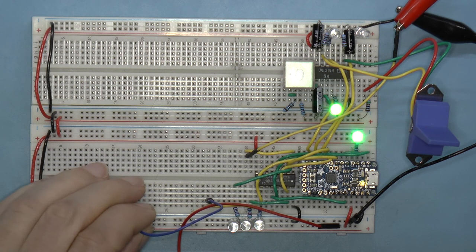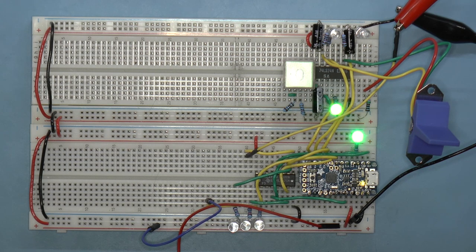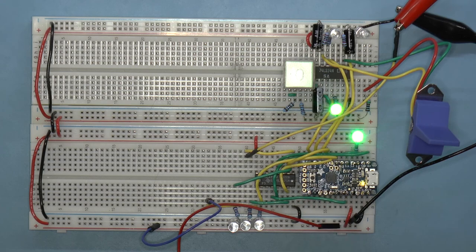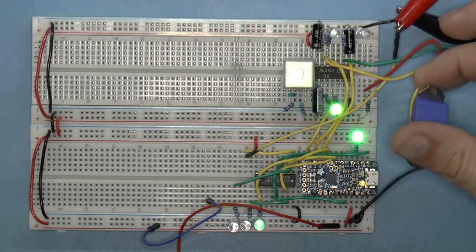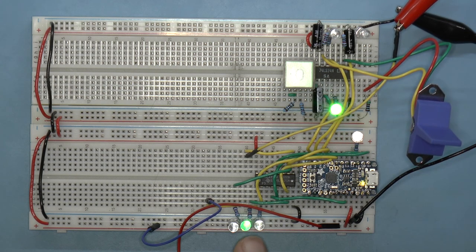First, I'll reset. Great. We're in state 0, and hold is being asserted. The hold acknowledge signal is also being asserted. Now I'll step. Great. We went to state 1, then 2.